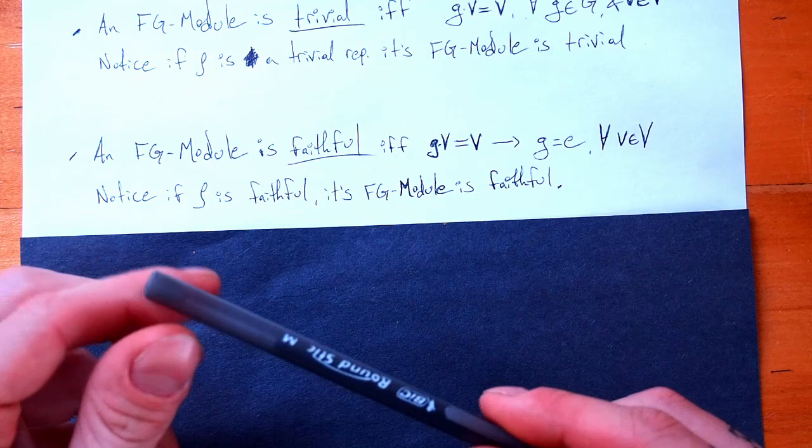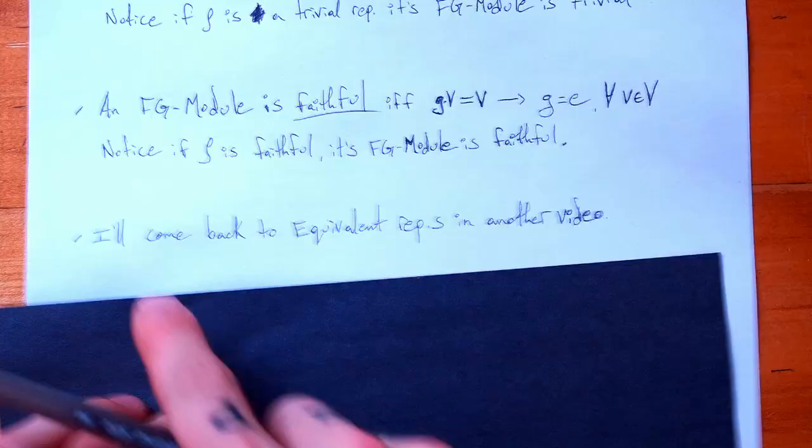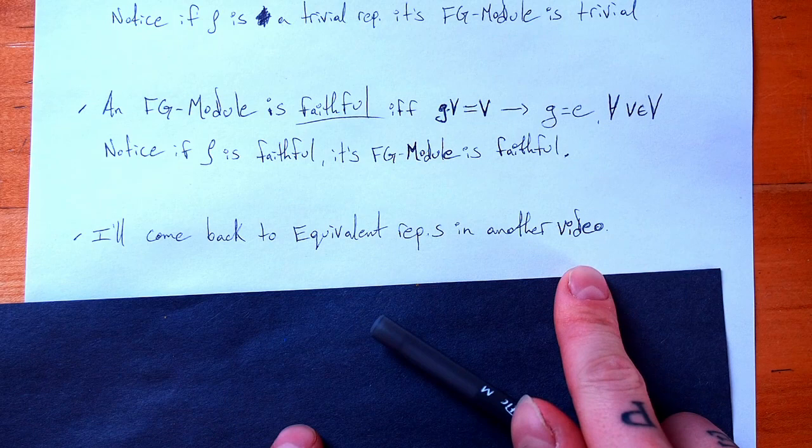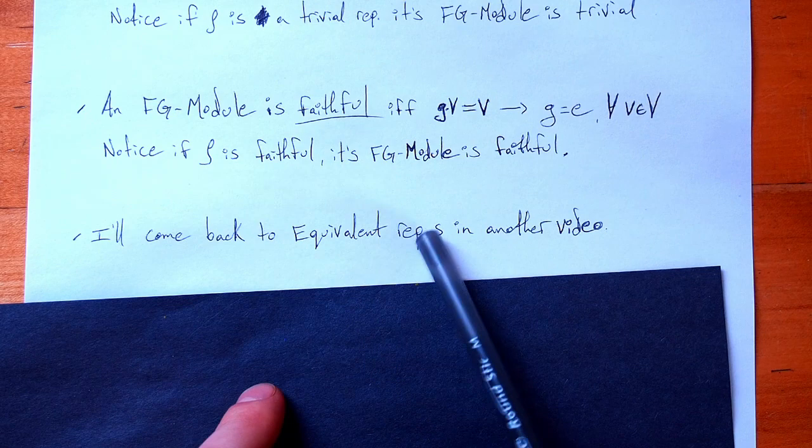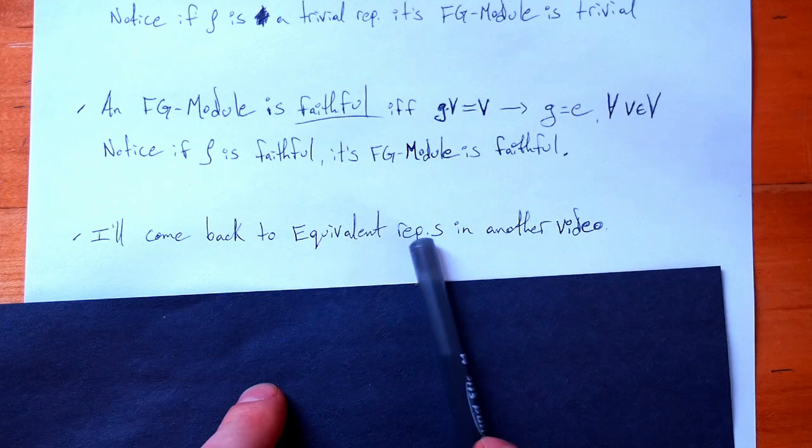The last definition we talked about with representations was equivalence, and I'm going to come back to that in another video — probably my next video — looking at how equivalent representations show up in light of FG modules. If you want to start thinking about it, remember that equivalent representations are the same representation just written in a different basis, so think about how that affects how the representation acts on a vector space.